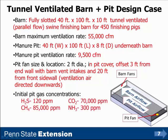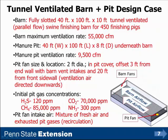Initial gas concentrations in the pit are assumed to be uniform at these levels: 120 parts per million of hydrogen sulfide, 70,000 parts per million of carbon dioxide, 85,000 parts per million of methane, and 300 parts per million of ammonia. We are assuming that the pit fan intake air is a mixture of fresh air and exhausted pit gases taken directly above the manure pit cover — a recirculation type pit fan situation rather than ducted fresh air.